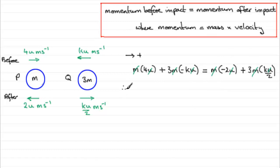I'm just going to tidy this up. Rewrite it. What we've got here is, therefore, 4 minus 3k equals minus 2 and then plus 3k over 2.